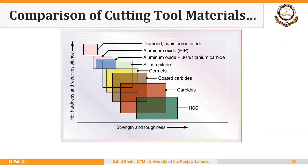This graph shows essentially the same information. On the x-axis is strength and toughness, and on the y-axis is hot hardness and wear resistance. You can see that as we move to carbide, oxide, and finally to diamond and CBN, toughness reduces. But diamond and CBN have the highest hot hardness and wear resistance, while HSS has the highest toughness.